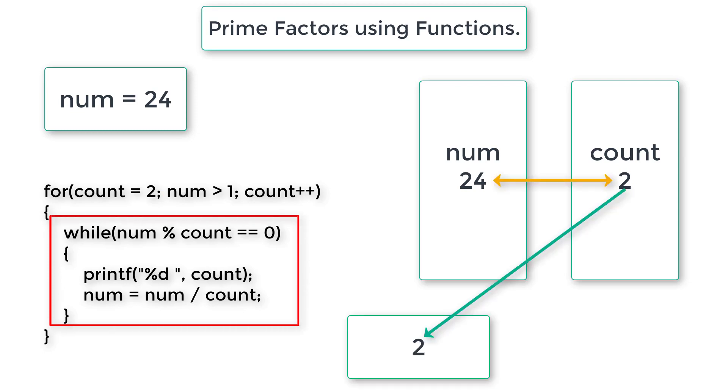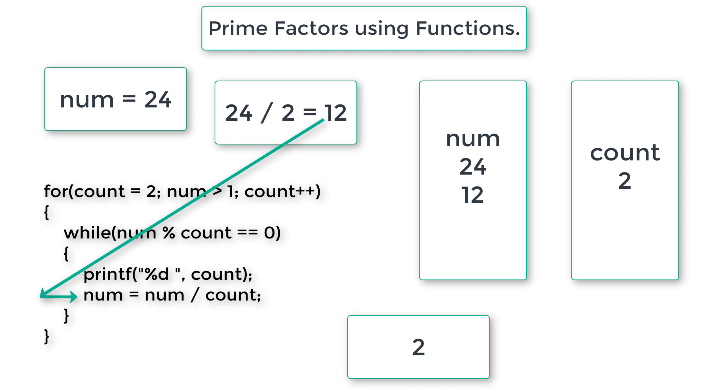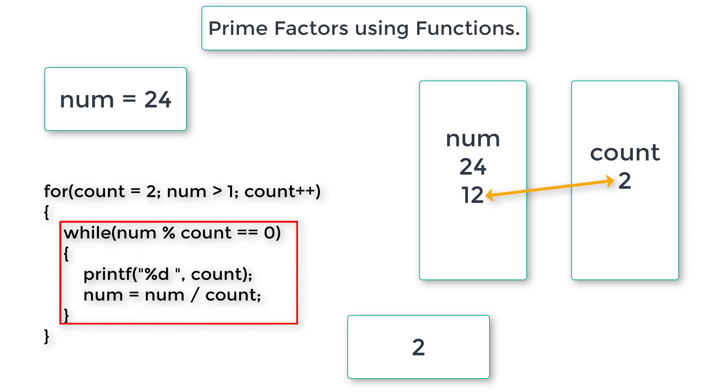So the while loop, 24 modulo divide 2, yes it is possible. So print 2 and divide 24 by 2, we will get 12. So num is 12 now. Now 12 modulo division 2, yes it is possible. So print 2 and then divide 12 by 2 is 6. So 6 is num now.